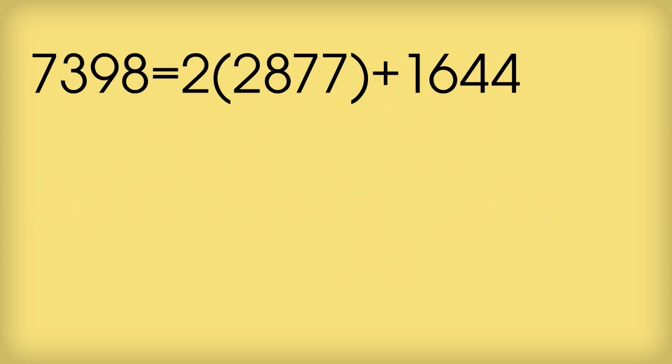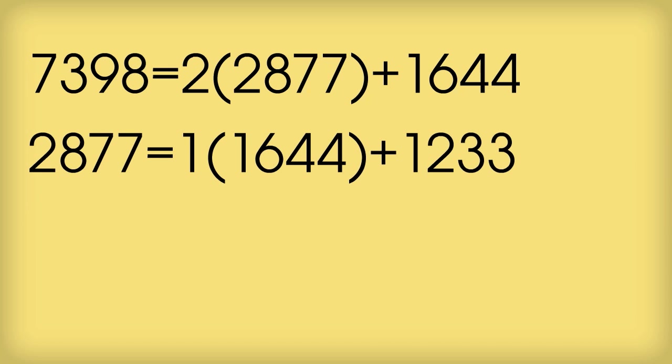Then the bright idea was, well why not just keep doing this? So we can say that 2877 equals 1 times 1644 plus 1233. And so now we've made the problem just working out the GCD of 1644 and 1233.